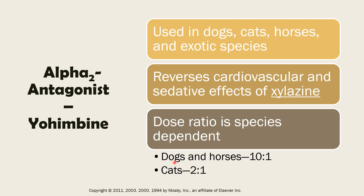In dogs and horses, the dose ratio is 10:1, meaning you use one-tenth of the agonist dose as the dose of your antagonist. So the agonist you are reversing is xylazine, and you use one part dose of yohimbine. For cats, the ratio is 2:1 — two parts agonist, and one part of that will be the dose of your yohimbine antagonist.